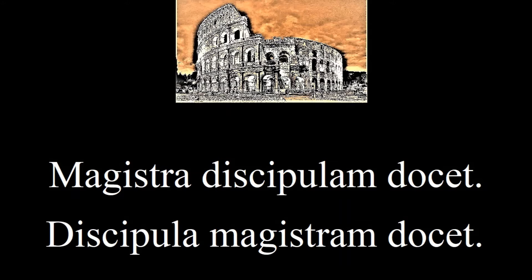So if we want to switch the people and say 'the student teaches the teacher,' we say Discipula magistrum docet. Did you also notice that the verb comes at the end of the sentence?